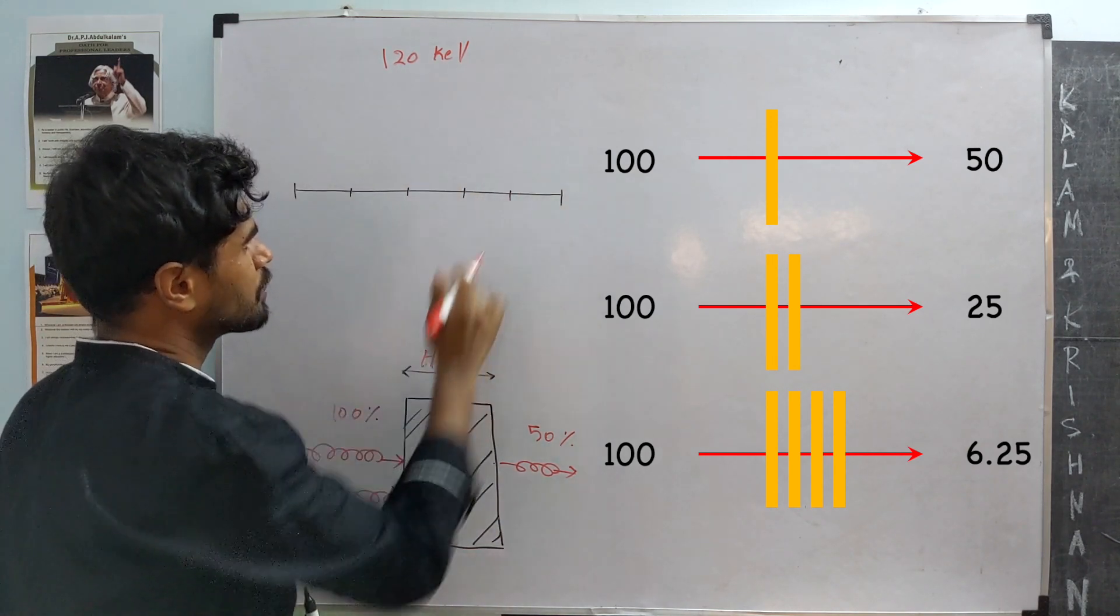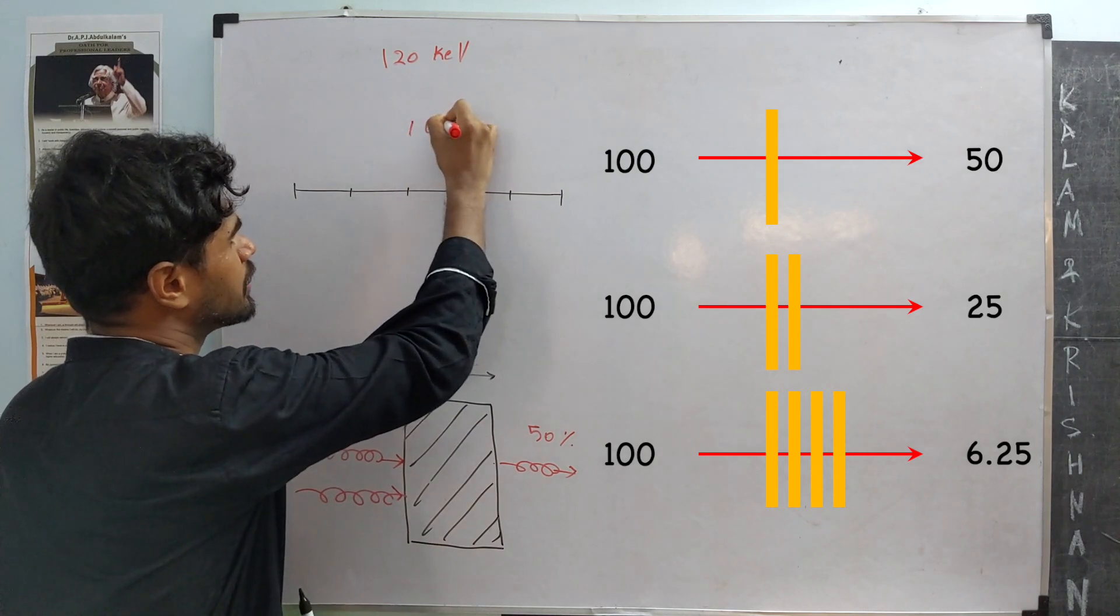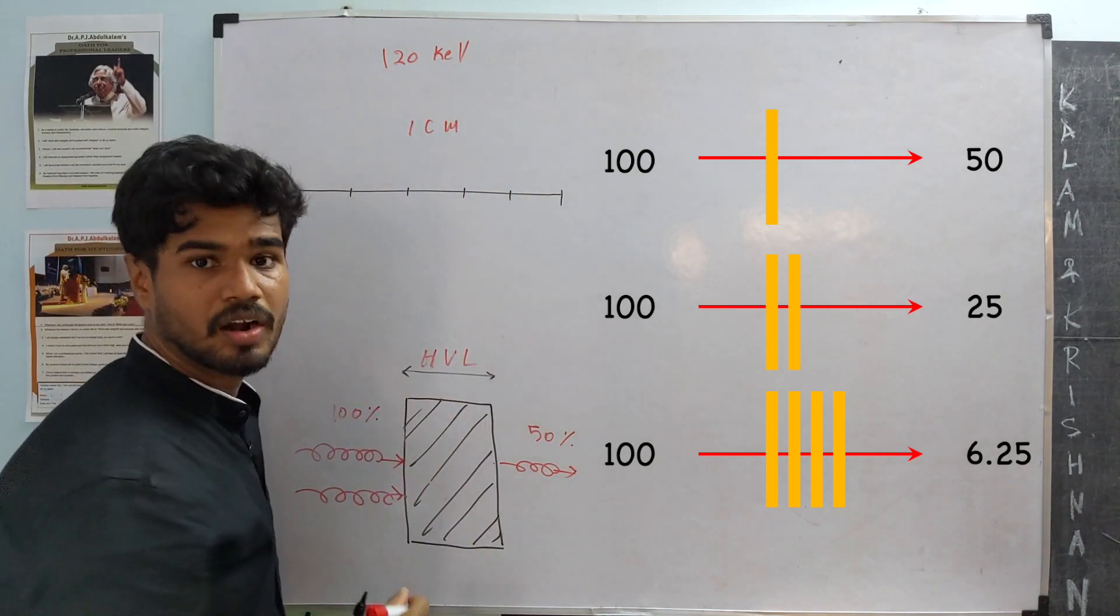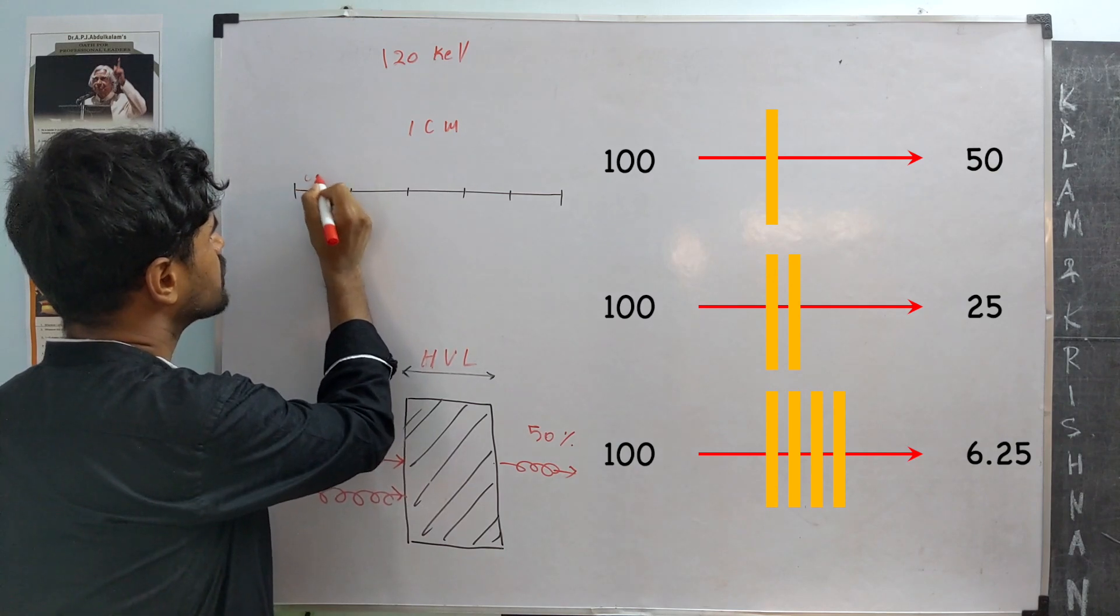Now, the total length of the sodium iodide is 1 centimeter. And half-value layer is given to be 0.2 centimeter.